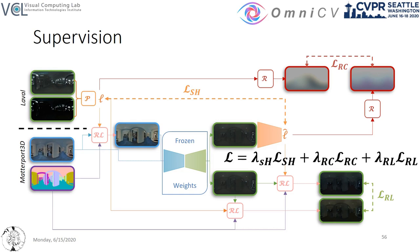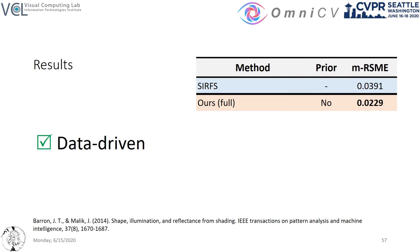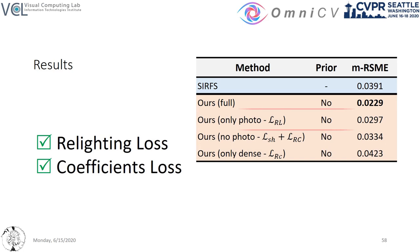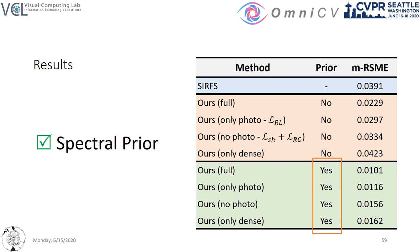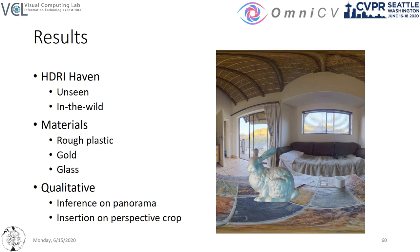As all prior work focuses on perspective images, we offer results compared to the work of Barron and Malik, which has no restrictions. For a fair scale-free assessment, we report the median-scaled RMSE, which shows the efficacy of our data-driven approach. Our loss ablation indicates the importance of photometric and coefficient losses, with the former having the largest effect. Yet the most significant boost is offered by the spectral prior function that aids the learning process. We offer qualitative results on unseen in-the-wild samples harvested from the Internet.